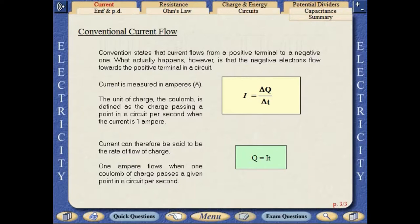Current is measured in amperes. The unit of charge, the coulomb, is defined as the charge passing a point in a circuit per second when the current is 1 ampere. Current can therefore be said to be the rate of flow of charge. 1 ampere flows when 1 coulomb of charge passes a given point in a circuit each second.